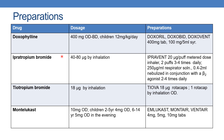The next drug is ipratropium bromide, which is an anticholinergic. The dose is 40 to 80 mcg by inhalation. The preparations are Ipravend 20 mcg per puff metered dose inhaler, 2 puffs 3 to 4 times daily, also 250 mcg per ml respirator solution, and 0.4 to 2 ml nebulized in conjunction with a beta-2 agonist 2 to 4 times a day.